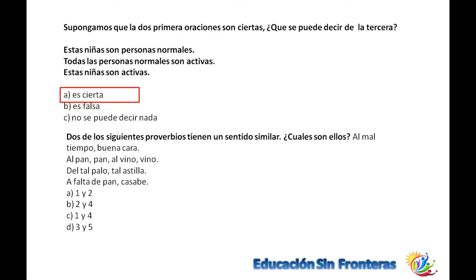Dos de los siguientes proverbios tienen un sentido similar. ¿Cuáles son? A mal tiempo buena cara; al pan, pan y al vino, vino; de tal palo tal astilla; y a falta de pan, casado. La 1 y la 4: a mal tiempo buena cara y a falta de pan, casado. Ambas implican resignación: si no se dio algo, se da lo otro.